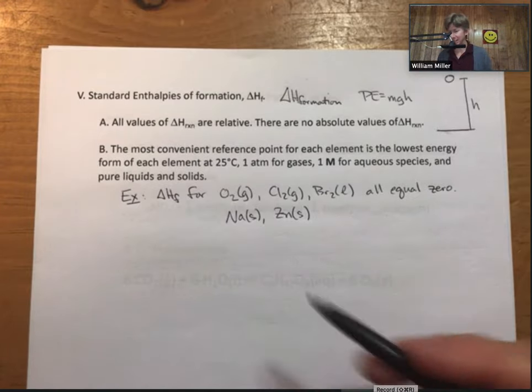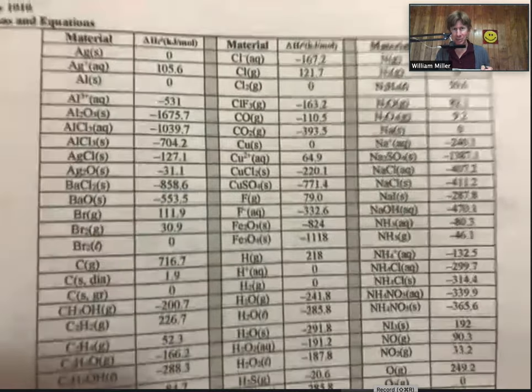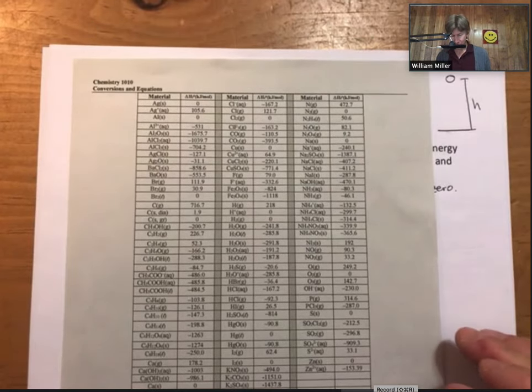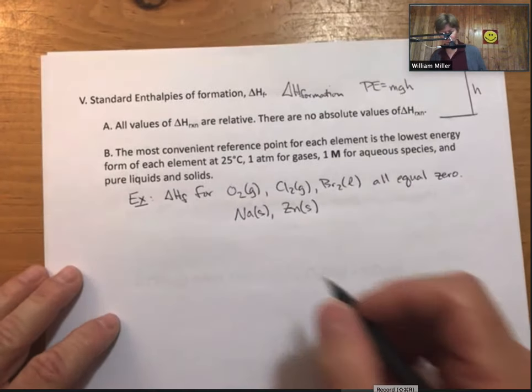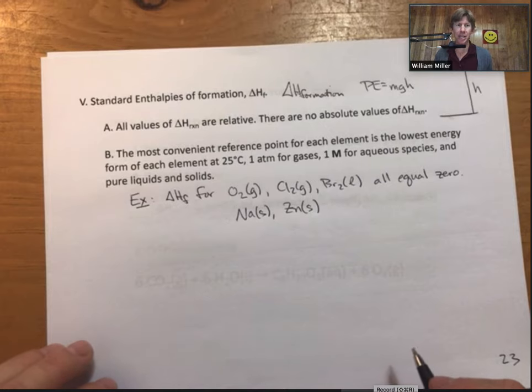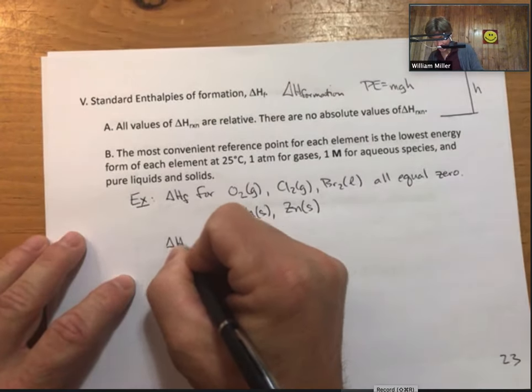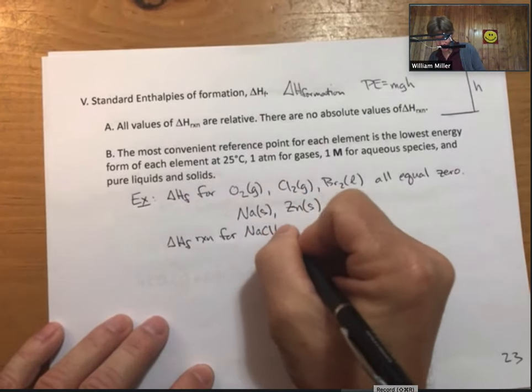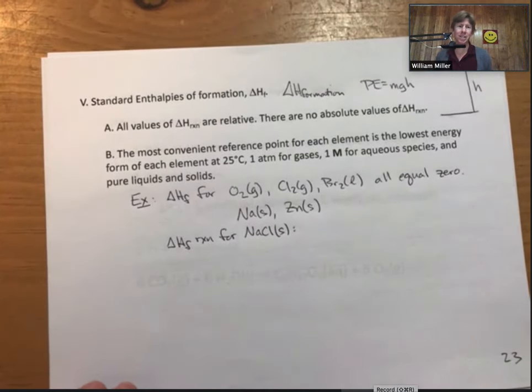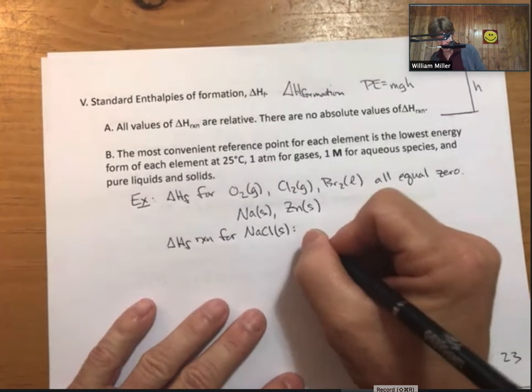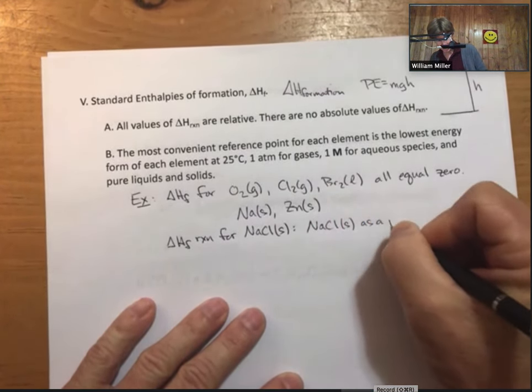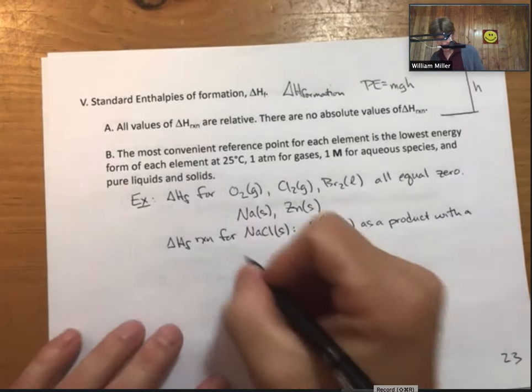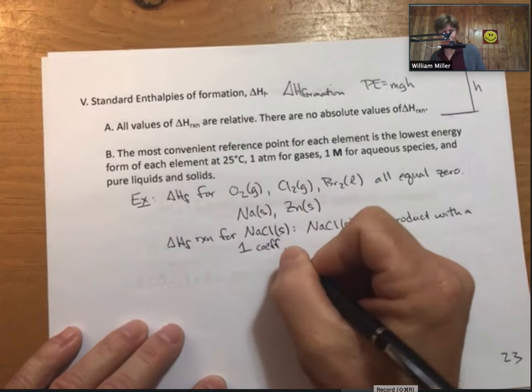And what I've got is a table of Delta HF values that you will be given on your exams. And what we're going to do is we're going to do what's called a Delta HF or change in enthalpy of formation reaction for sodium chloride solid. And a Delta HF reaction for any material has that material as a product with a one coefficient because we are forming one mole of it.